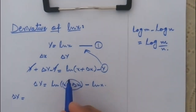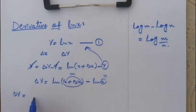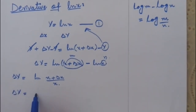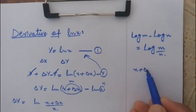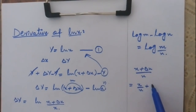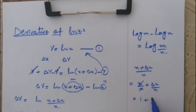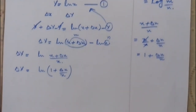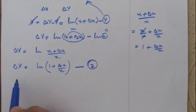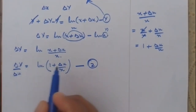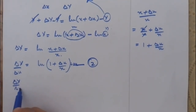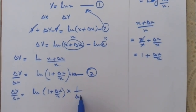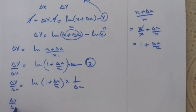Applying this formula, del y is equal to ln((x plus del x) / x), which simplifies to ln(1 plus del x/x). Now dividing equation 2 by del x to get the ratio of the increment: del y upon del x is equal to ln(1 plus del x/x) into 1 upon del x.